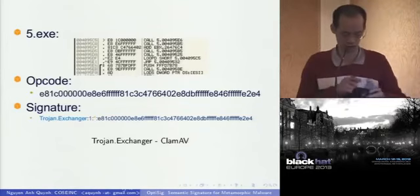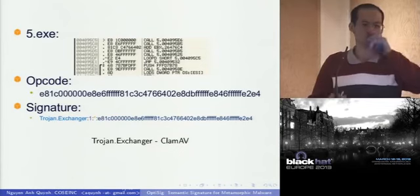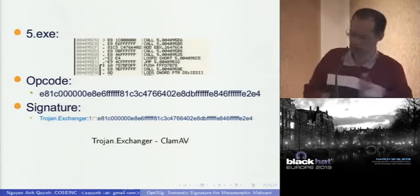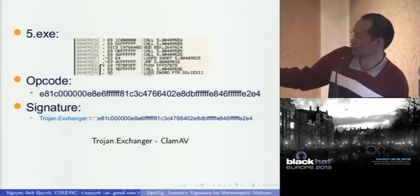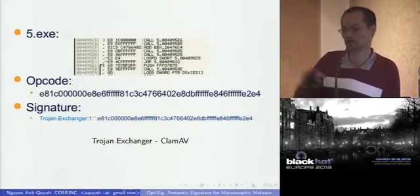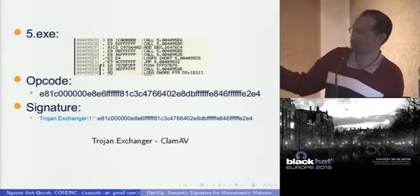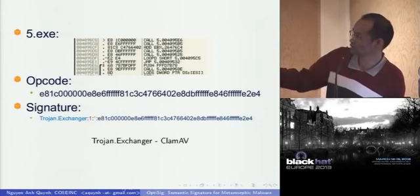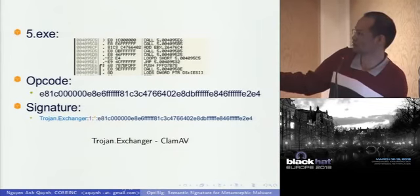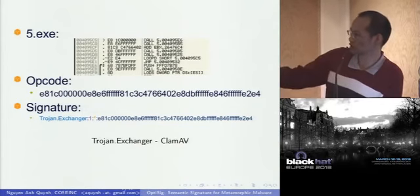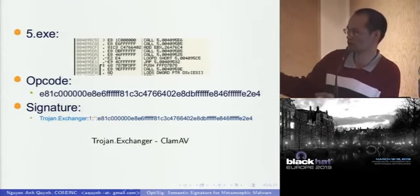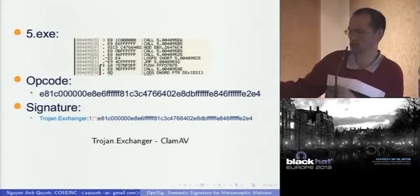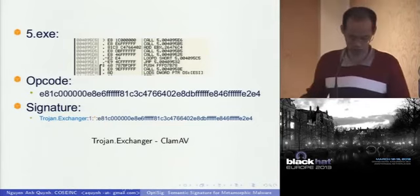Here's one simple signature from ClamAV. You can see that this file has an operation code that is specific to a malware — we don't see it in normal files. They take this code out and consider it a signature. If you match this signature with a particular file, you can identify this file as this malware. In this case, it's georgian.exchanger.